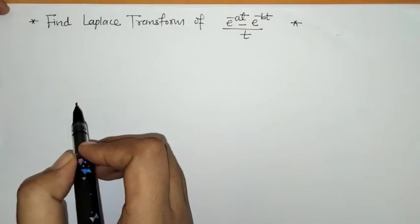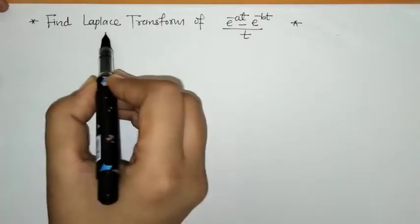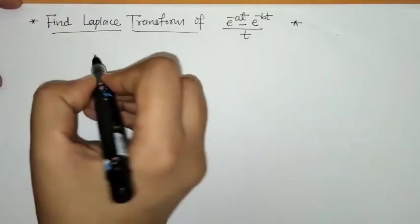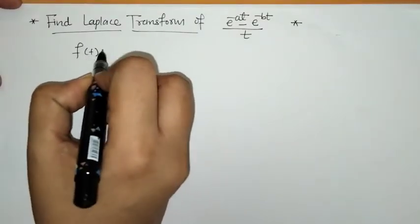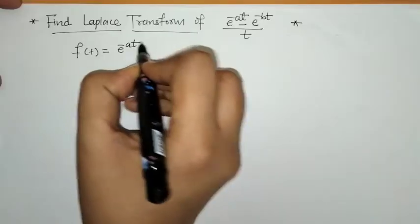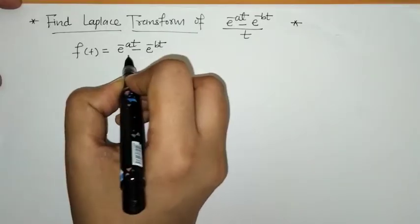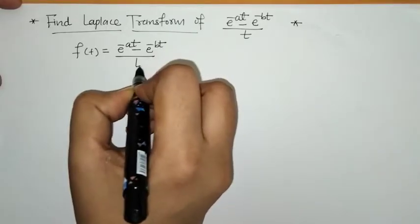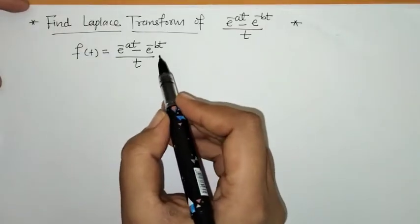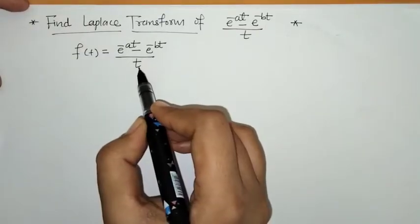Hello everyone, welcome to Unlock Maths. Today we have to find the Laplace transform of this function. We have f(t) = (e^(-at) - e^(-bt)) / t.